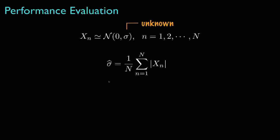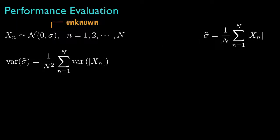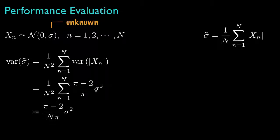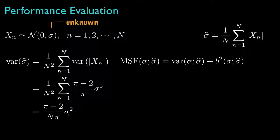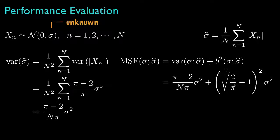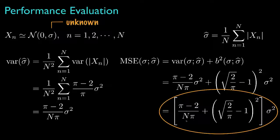Now let's look at our other example, where the data have zero mean and unknown standard deviation sigma, and the estimator is the sample mean of the absolute values. Because the data are independent, the variance for this estimate is the sum of variances for the absolute values times 1/n². Using the Gaussian density, the variance of the absolute value of a zero-mean Gaussian random variable is (pi - 2)/pi times sigma squared, so the variance for the estimate is (pi - 2)/(n·pi) times sigma squared. The mean square error is this variance plus the square of the bias, yielding an expression that depends on both n and the actual value of sigma.